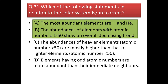Next question: which of the following statements in relation to the solar system is correct? The most abundant elements are hydrogen and helium — correct. Elements with atomic number 1 to 50 show an overall decreasing trend in abundance — also correct. The abundance of heavier elements (atomic number greater than 50) are mostly higher than lighter elements — this is wrong; lighter elements have more abundance than heavier elements. Elements with odd atomic number are more abundant than their neighbors — also wrong; elements with odd atomic number are less abundant than their neighboring even-number elements.